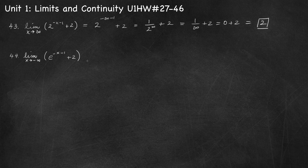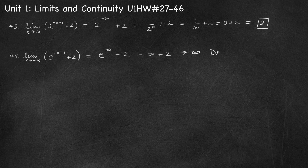Number 44, limit as x approaches negative infinity of e to the negative x minus 1 plus 2. The exponent is negative times negative infinity, which gives positive infinity, minus 1 — still infinity. e to the power infinity: since e is approximately 2.72 and greater than 1, raising it to the power infinity gives infinity. So we have infinity plus 2, which is still infinity. The limit does not exist.